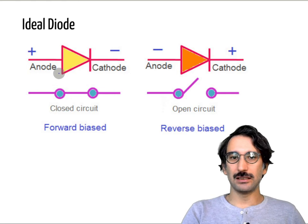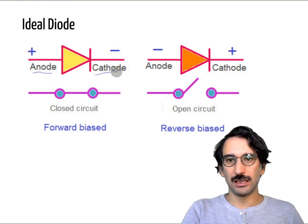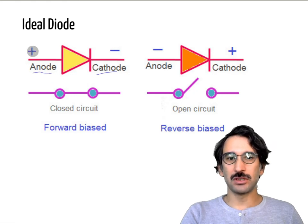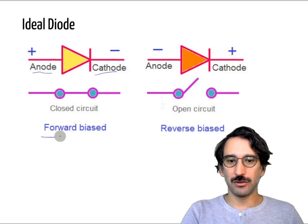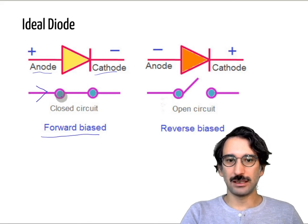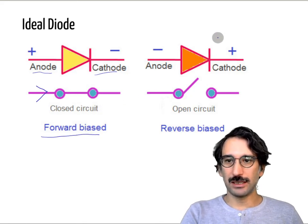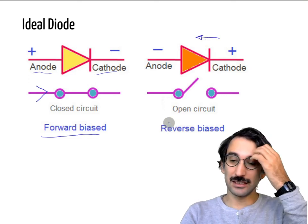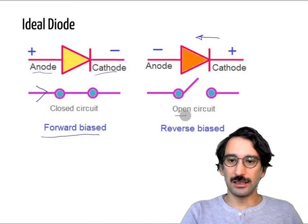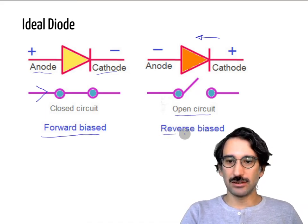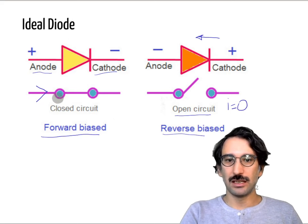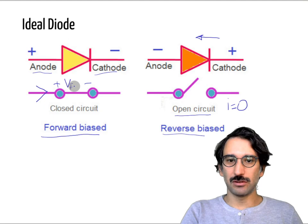If you look at an ideal diode, we have the anode and the cathode. If we apply a positive voltage to the anode, the diode becomes forward biased, and once forward biased it acts like a simple switch — it starts conducting and current flows in that direction. However, if you apply a negative voltage, our ideal diode immediately becomes an open circuit — that is called reverse bias. When reverse biased in an ideal diode, current is zero, and when forward biased, the forward voltage is zero.